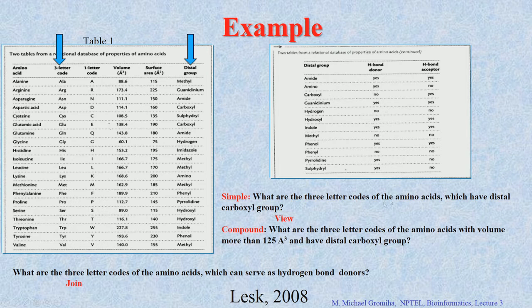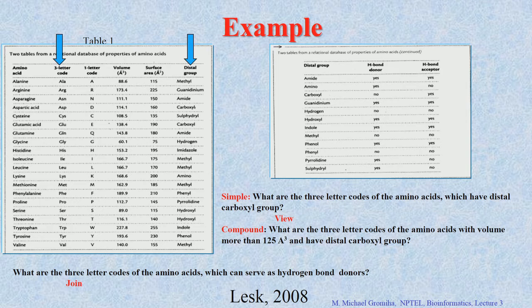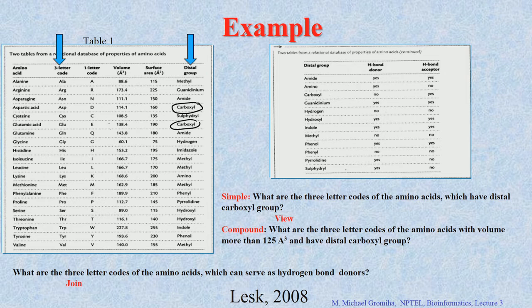The question is: what are the 3-letter codes of amino acids which have a distal carboxyl group? Go to the distal group column, find which entries have carboxyl, then look at the 3-letter code column. The answer is Aspartic Acid (Asp) and Glutamic Acid (Glu). Second question: what are the 3-letter codes of amino acids with volume more than 125 ångström-cubed and a distal carboxyl group? You look at both the volume and distal group conditions to find the answer — 125.